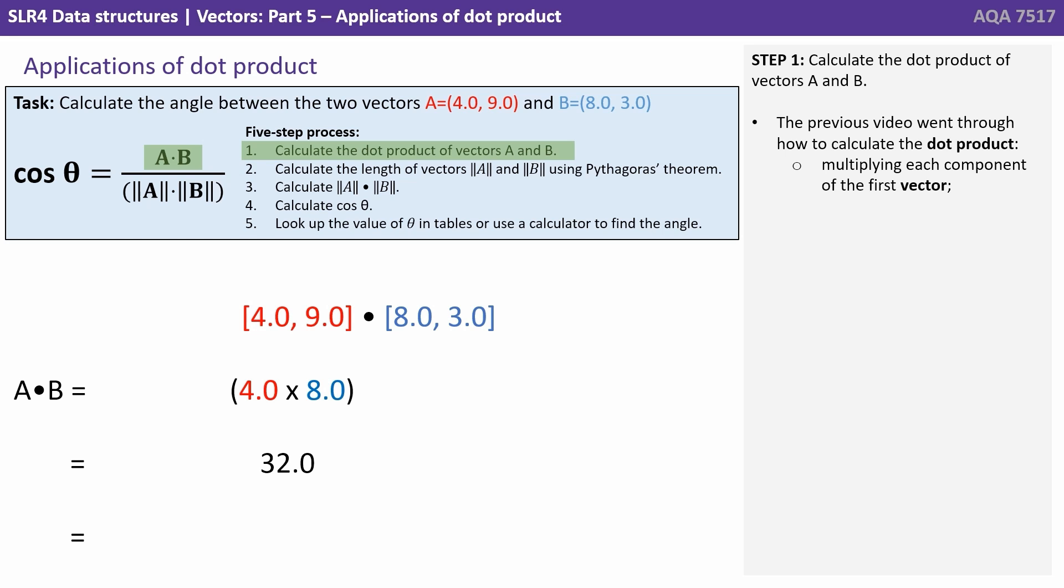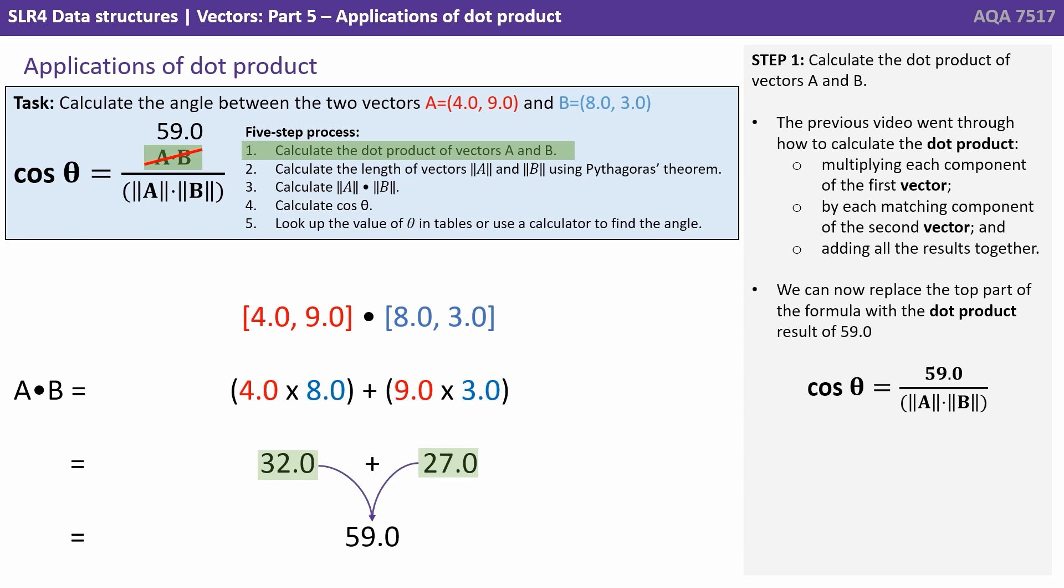Let's step through them one at a time. So step one, calculate the dot product of vectors A and B. Now the previous video went through how to calculate the dot product. Multiplying each component of the first vector by each matching component of the second vector and adding all the results together.